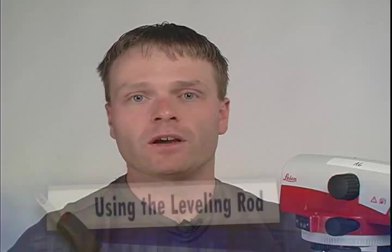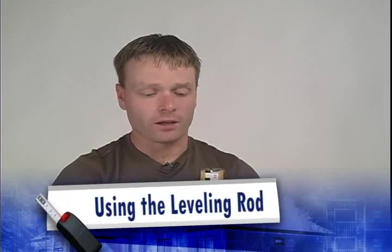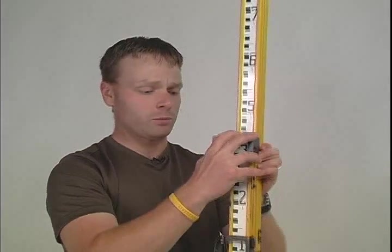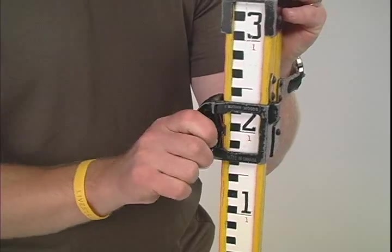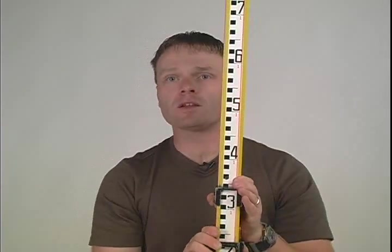The next step is to take a reading on the rod. So this is the rod, and the rod is just one big ruler. First thing we need to do with the rod is expand it out properly so that it hits the stops and is clamped down to keep it from sliding.